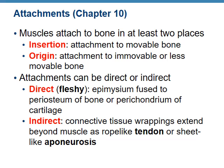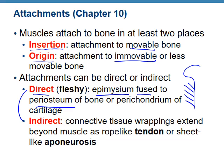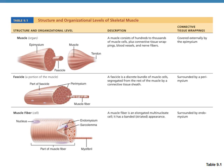Muscles are attached to bones in two different places. The site of attachment that is movable is called insertion, and the site that is immovable is called origin. There is also direct and indirect attachment. With direct attachment, the epimysium of the muscle fuses with the periosteum of the bone. With indirect attachment, a rope-like tendon leads from the muscle to the bone.